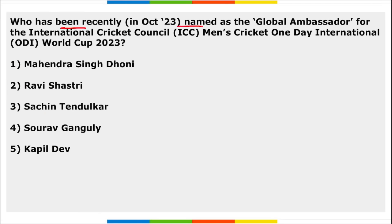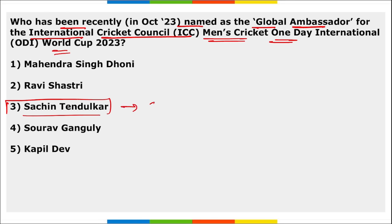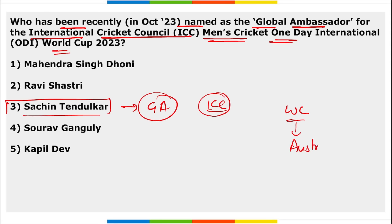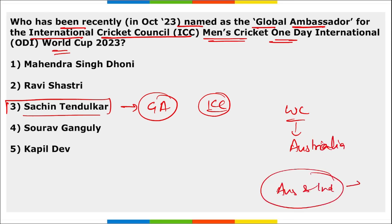Sachin Tendulkar was named as the Global Ambassador for ICC Men's Cricket ODI World Cup 2023. Australia won the World Cup, defeating India in the final.